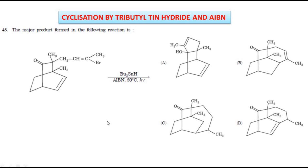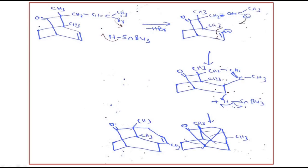You have to identify and solve this question using tributyltinhydride in presence of AIBN as an initiator. Now, let us take the question. In this compound, the Br, bromine will be removed. Here, the Br will be eliminated and this hydrogen is cleaved. So, you will get a radical here.